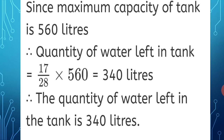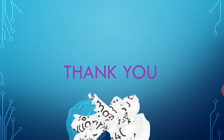The quantity of water left in the tank is 340 liters, after accounting for the water used by Umesh. That is, 17 upon 28 multiplied by 560. Hope you have understood this practice set. Practice it well in your notebook. Keep learning. Stay safe. Thank you.